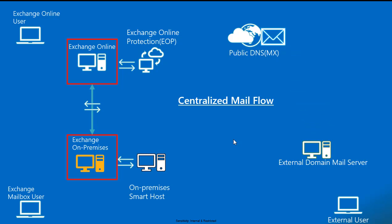The mail is delivered to Exchange Online Protection via SMTP port 25 from the external domain mail server. Once Exchange Online Protection receives the email, it performs scanning — connection filter, malware filter, transport filters, and other checks. Post scanning, it validates where to deliver the email. When configured with centralized mail flow, it sends all scanned mails to the on-premises smart host using TLS on port 25.